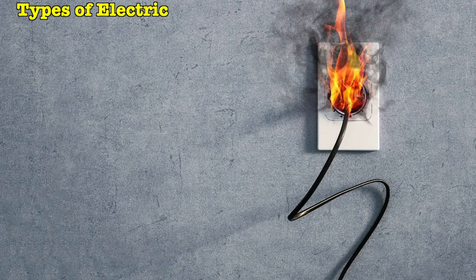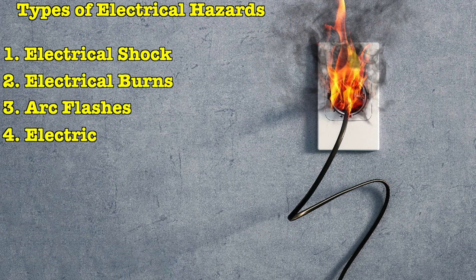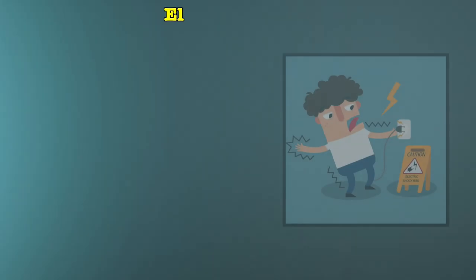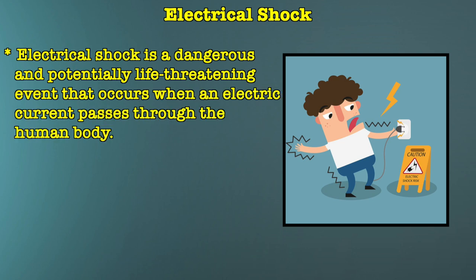Electrical hazards can be classified as electrical shock, electrical burns, arc flashes, and electrical fires and explosions. Electrical shock is a dangerous and potentially life-threatening event that occurs when electrical current passes through the human body. It can happen when a person comes into direct contact with a live electrical conductor, faulty equipment or an improperly grounded electrical system.